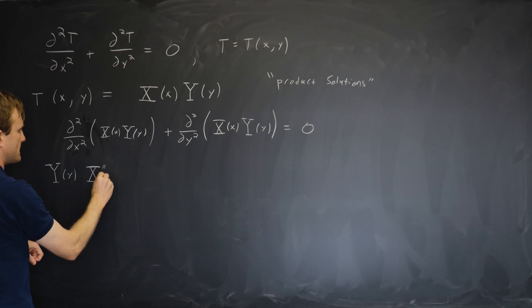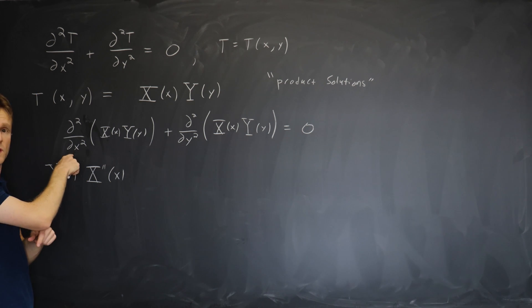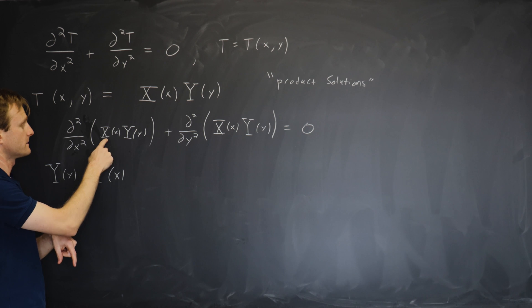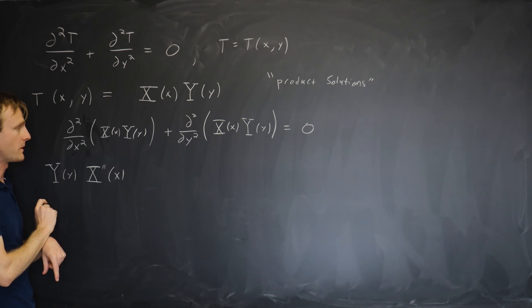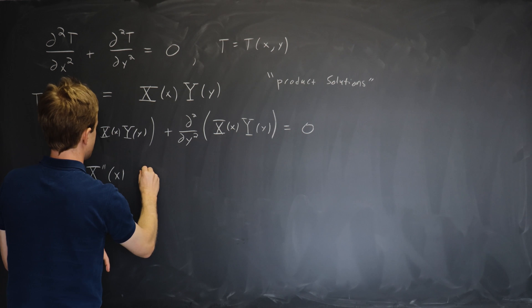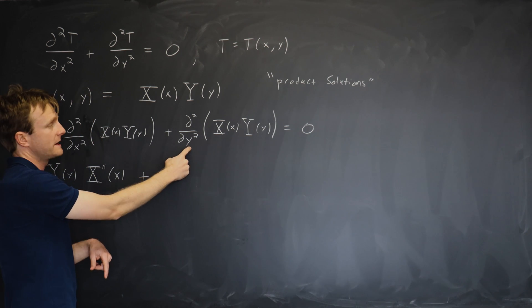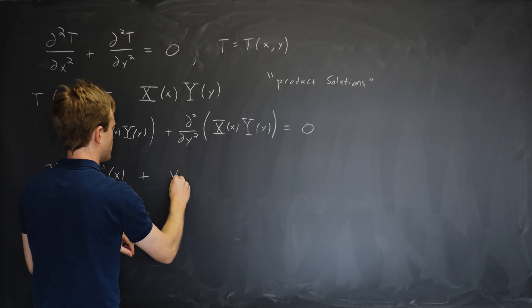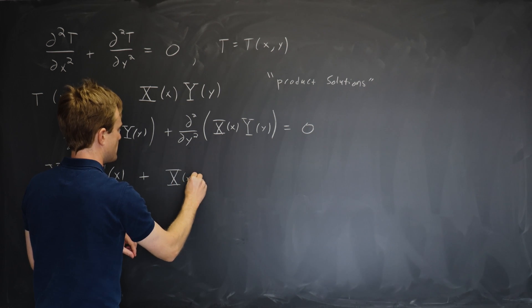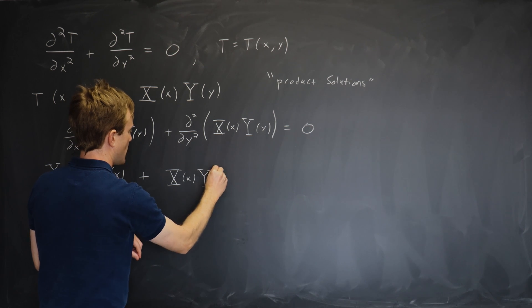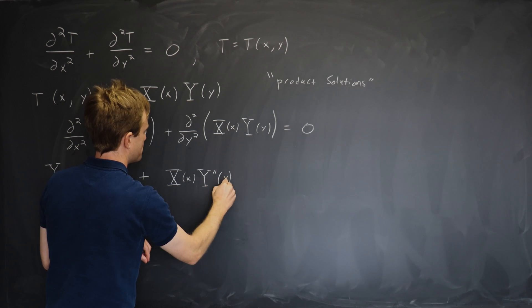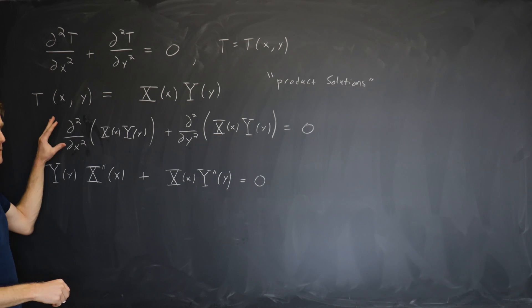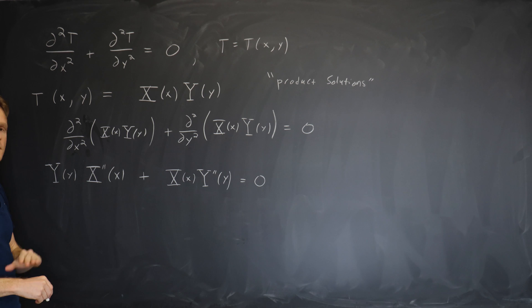But now we can just write it as double prime. Because although it was a partial derivative, now it's acting on something that's just a function of x. So we'll just call it x double prime. And similarly over here we're taking a y derivative. So the x of x is constant, can be brought out in front. So we get x of x times y double prime of y equals 0. So we've gotten rid of the partial derivatives in favor of ordinary derivatives.